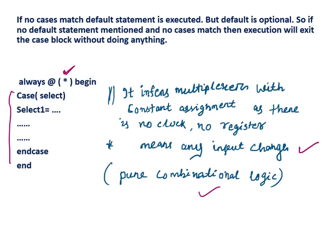Because here we have not included any clock or any register, so it is a pure combinational circuit. Always @(*) begin: if there is any change in the sensitivity list, then the case statement is evaluated. Then case select — it matches the expression, and once the expression matches, the respective statement is evaluated. Then end case, then end.